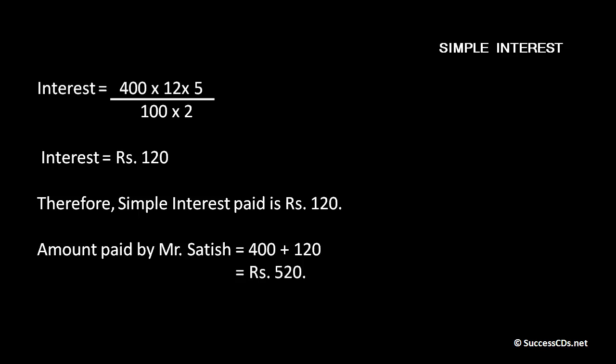We calculate it and interest comes out to be rupees 120. Therefore, interest paid by him will be rupees 120. And the final amount paid by Mr. Satish after two and a half years will be principal plus interest. Now principal was rupees 400, interest rupees 120. So the final amount is rupees 520.